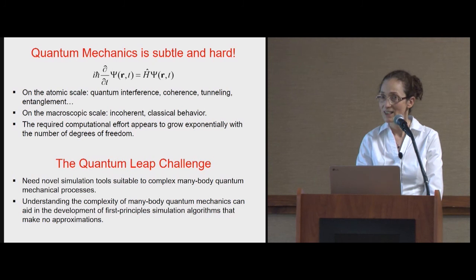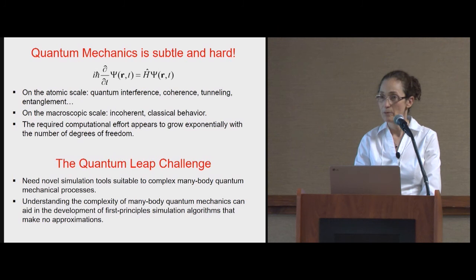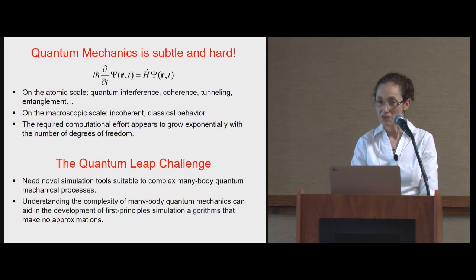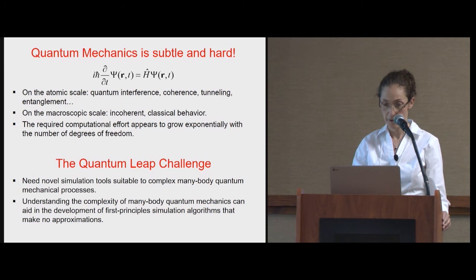At the same time, as these tools help us understand many-body processes, understanding quantum mechanics could help us develop better tools. In other words, we could use the physics we understand to guide our methods to converge and give us the right answer without introducing approximations. Going back and forth between those two goals is what we need to focus on and what we try to do here.